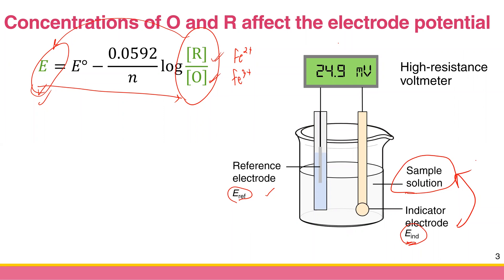For example, if your sample solution has more iron(III), then you will measure a more positive cell potential or more positive electrode potential. So the composition of the sample solution will affect only the indicator electrode, but not the reference electrode, because the reference electrode needs to maintain the same constant potential.